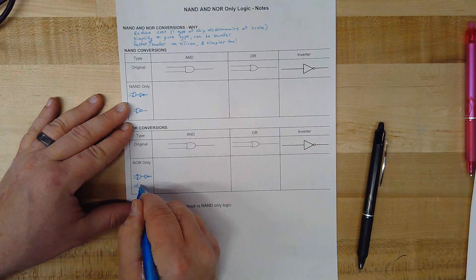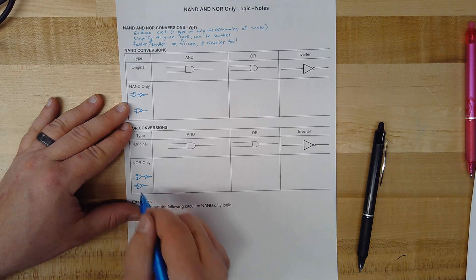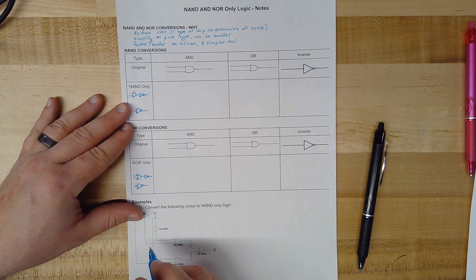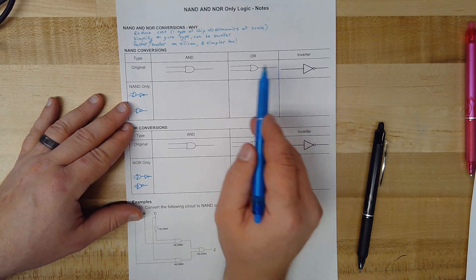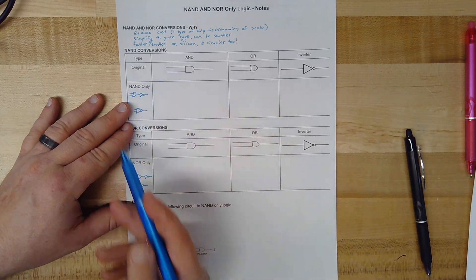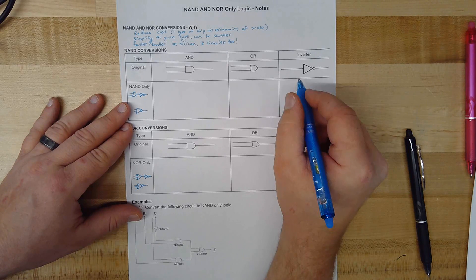A NAND gate is just a NAND symbol with a circle at the end to represent the inversion. And an OR gate is just an OR gate with a circle at the end to represent the inversion. Now, it turns out we can create any of our AOI gates using only our NAND or NOR gates. Let me show you how that works.